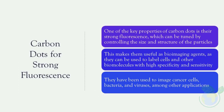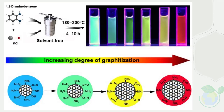Carbon dots for strong fluorescence. One of the key properties of carbon dots is their strong fluorescence, which can be tuned by controlling the size and structure of the particles. This makes them useful as bioimaging agents, as they can be used to label cells and other biomolecules with high specificity and sensitivity. They have been used to image cancer cells, bacteria, and viruses, among other applications.